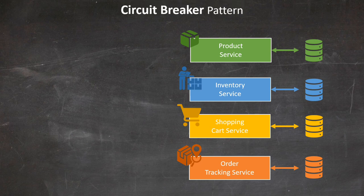I won't dive deep into the circuit breaker pattern since I already discussed it in a previous tutorial. But let's apply this pattern to our e-commerce solution — specifically to the inventory service to better protect the product service. We've just received a large number of the latest iPhones in our warehouse and want to update inventory. The inventory service calls the product service to get the product ID for the latest iPhone and obtains it.